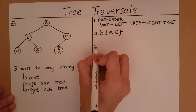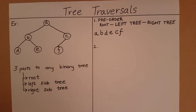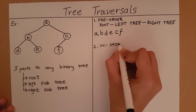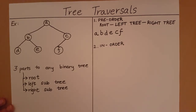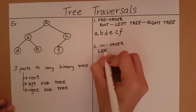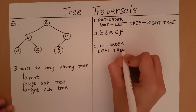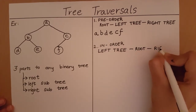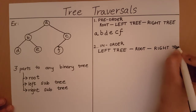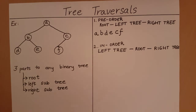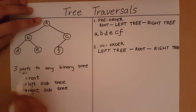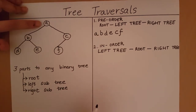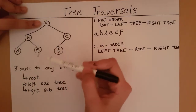Let's look at the next method of traversal. This is called inorder. In this case, first we will traverse the left subtree, then we will traverse the root, and then we will traverse the right subtree. So let's take our example: we have the tree rooted at A, with a root A, a left subtree, and a right subtree.